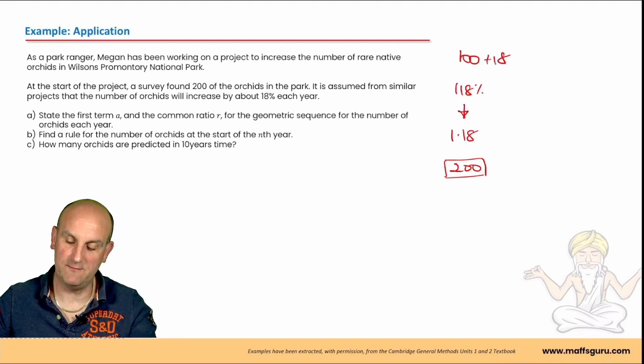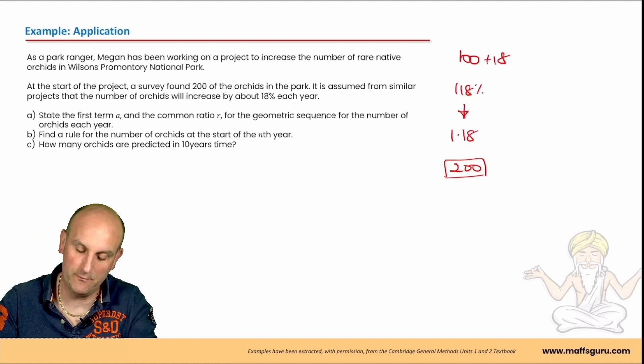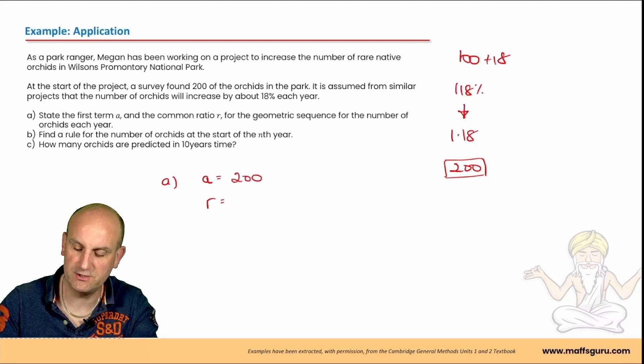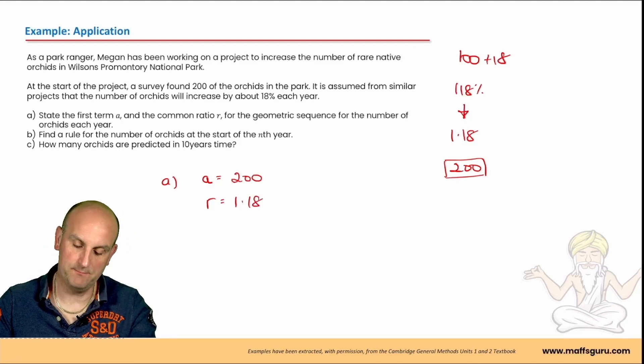A, state the first term and the common ratio. See, I didn't even read the question. I knew what they were doing. So for part A, what is my first term? So a would be equal to 200 and my common ratio would be 1.18. Not percent, just 1.18.